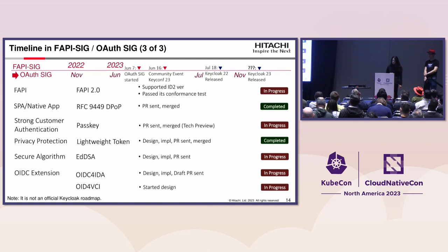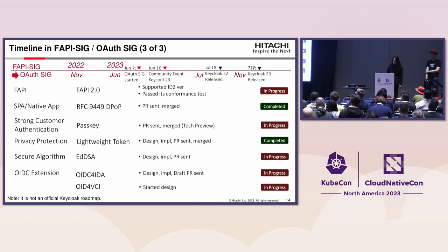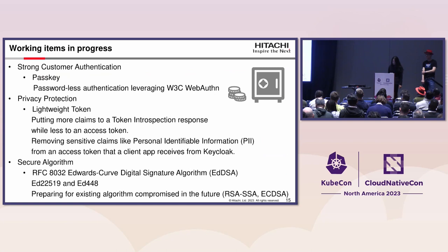OSIG continued working on FAPI 2.0 and DPoP, but also started other working items: passkey and lightweight token, EDDSA, OIDC for IDA, and OID4VCI. I'd like to tell you about these newly started working items in more detail.